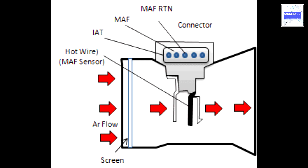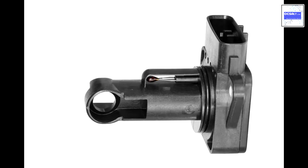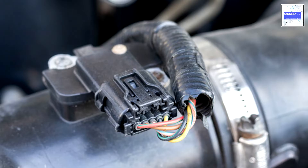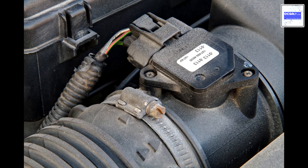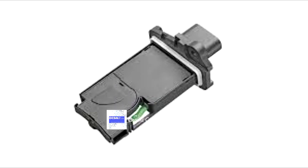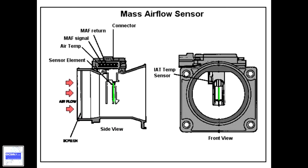A hot wire mass airflow sensor has a small electrically heated wire. A temperature sensor installed close to the hot wire measures the temperature of the air near the hot wire. When the engine is idling, a small amount of air flows around the hot wire, so it takes a very low electric current to keep the wire hot. When you press the gas, the throttle opens allowing more air to flow over the hot wire.